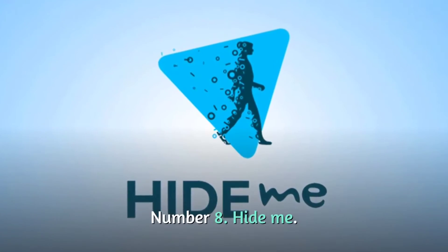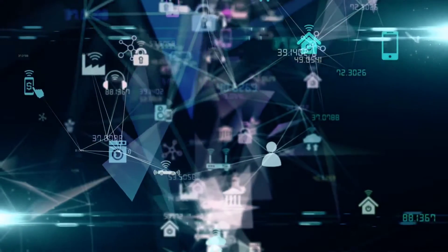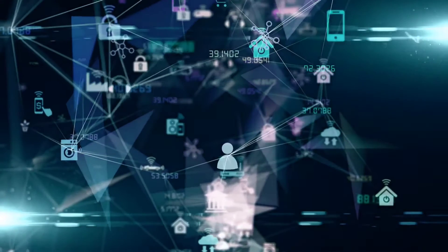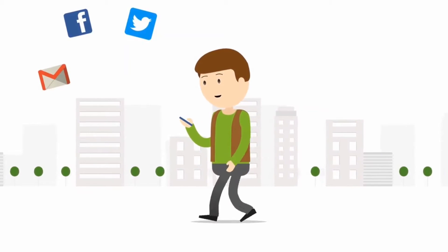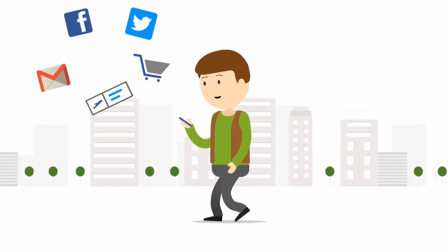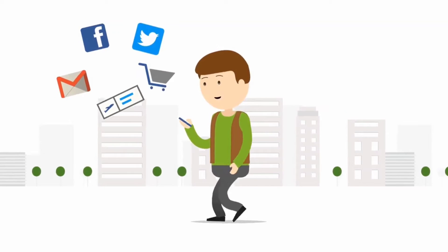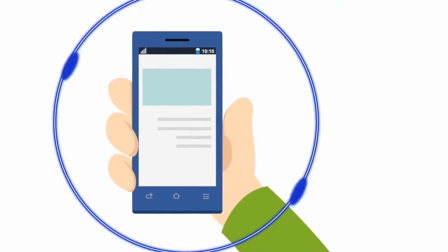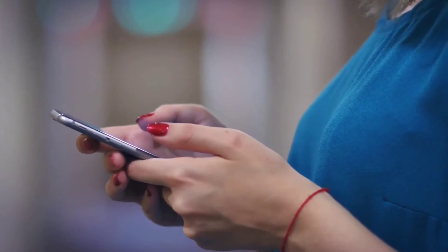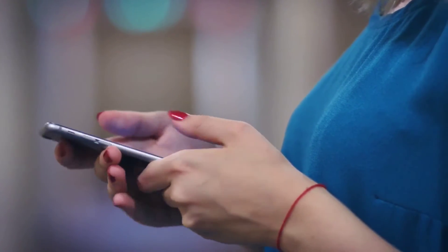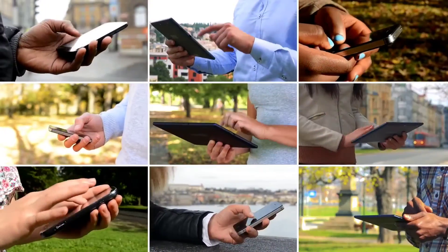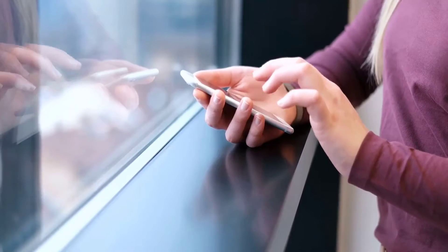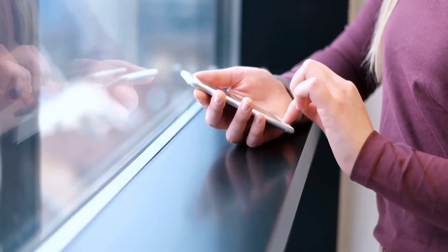Number 8: HideMe. HideMe is an Android application that provides security and privacy. Both the OpenVPN and IKEv2 protocols are supported by this utility. You may begin utilizing this service by just pressing a single button. You have complete freedom to use any app or website you choose. It allows you to browse the internet or download things anonymously. VoIP services such as Viber, Tango,